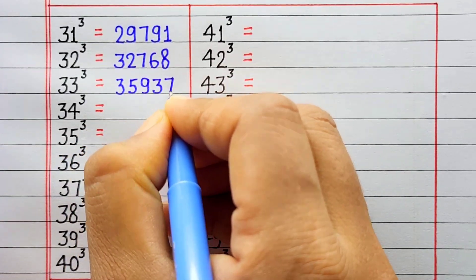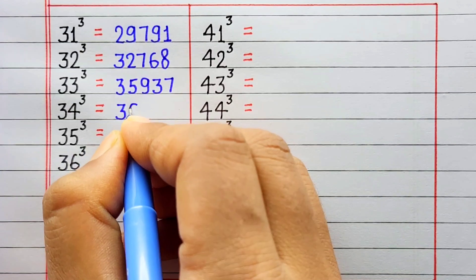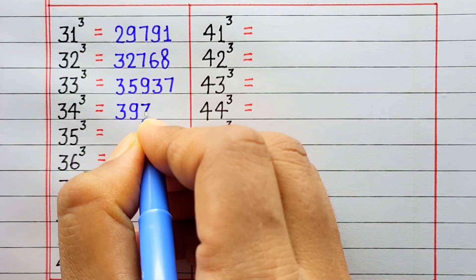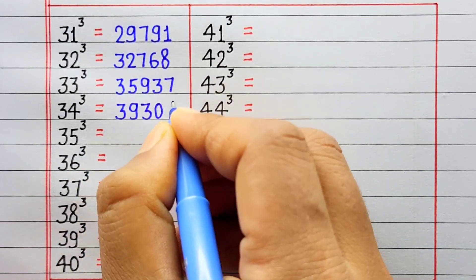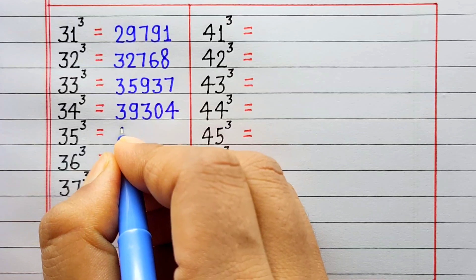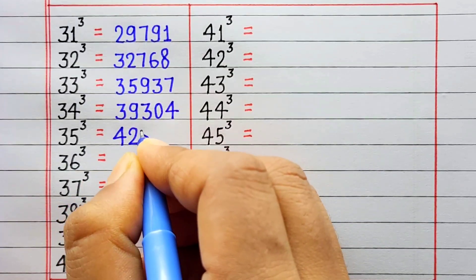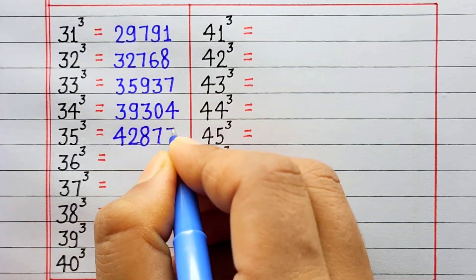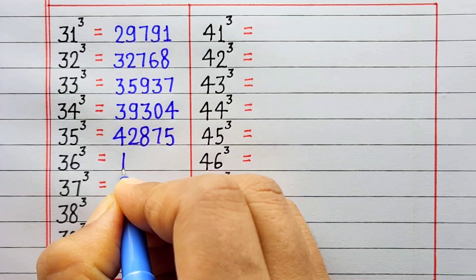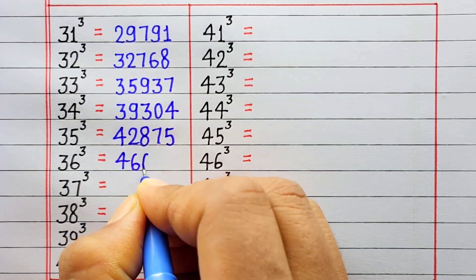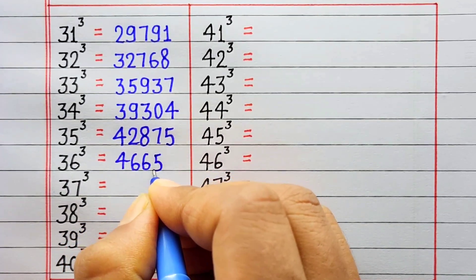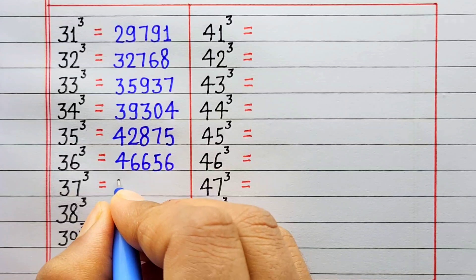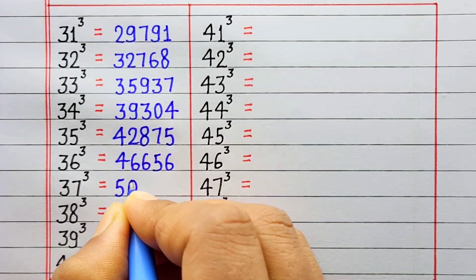Cube of 34 is 39304. Cube of 35 is 42875. Cube of 36 is 46656. Cube of 37 is 50653.